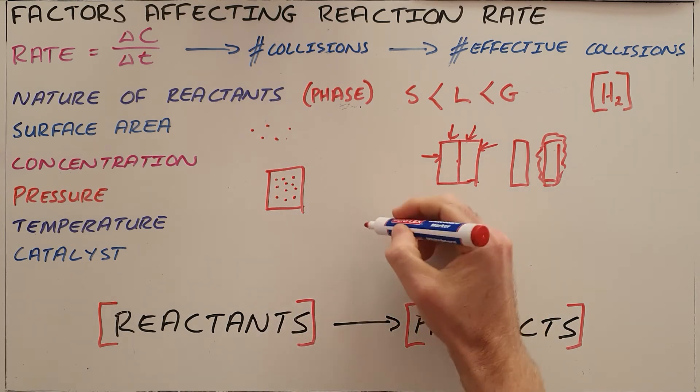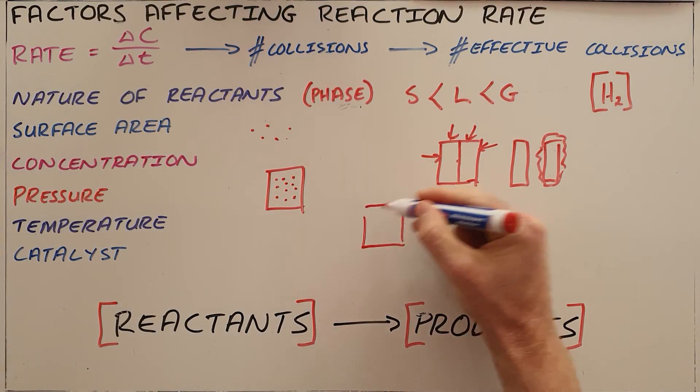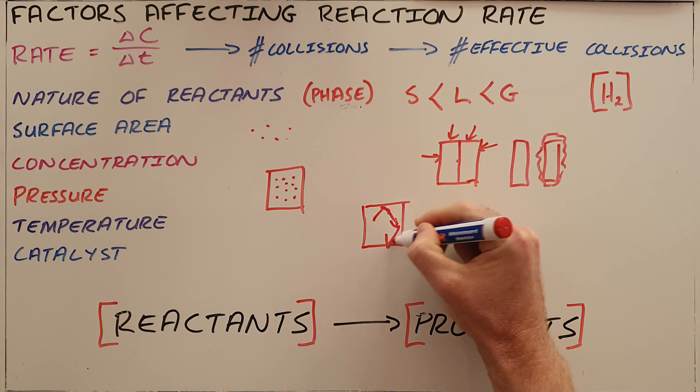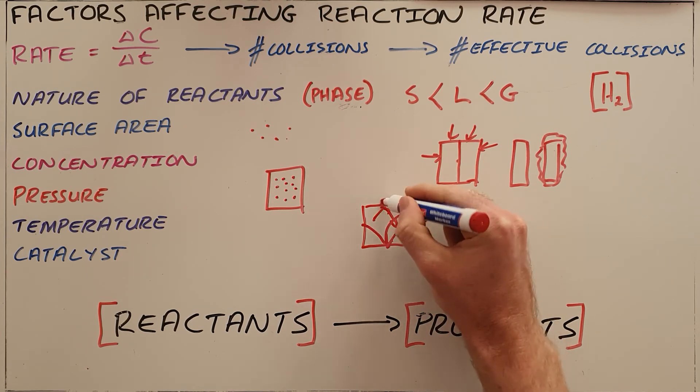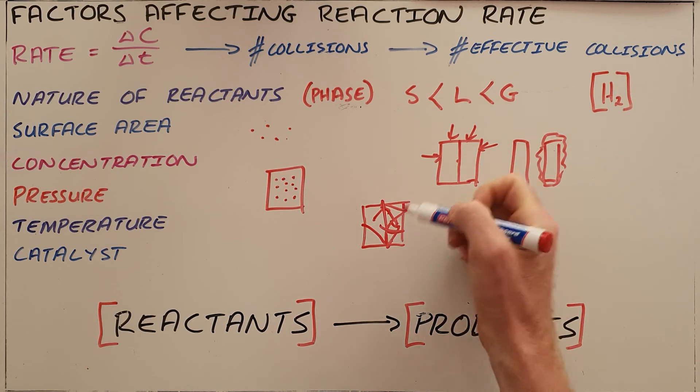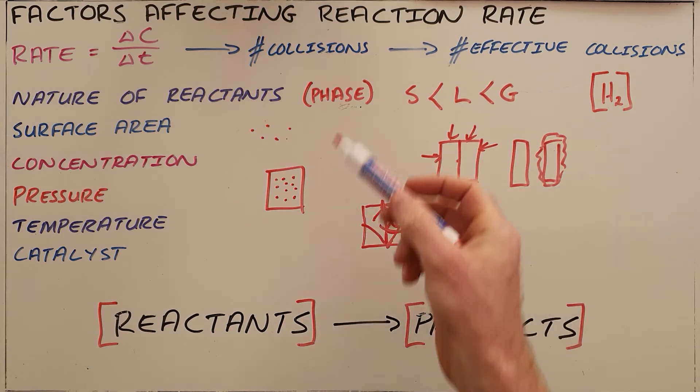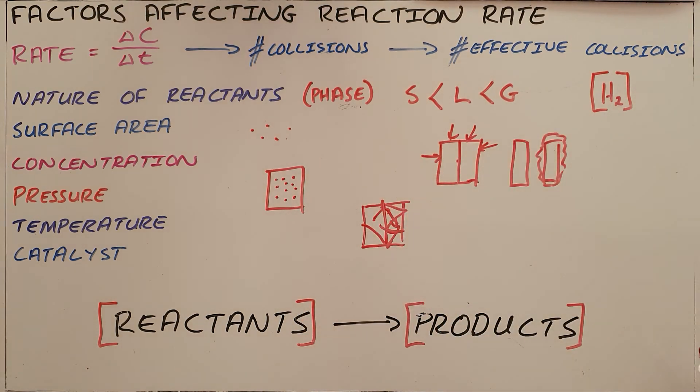A temperature increase increases the speed at which particles move around in a container. Since they move around faster, they would therefore collide with each other more often. Since they collide more often, there would be more effective collisions.